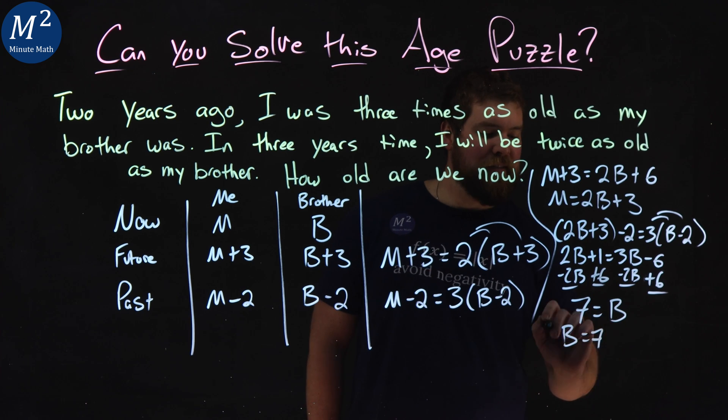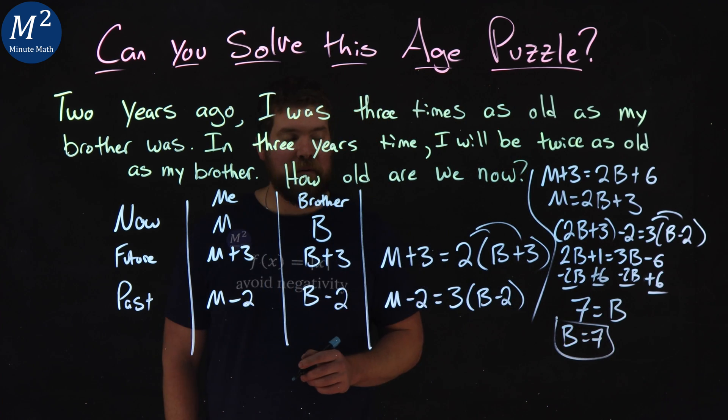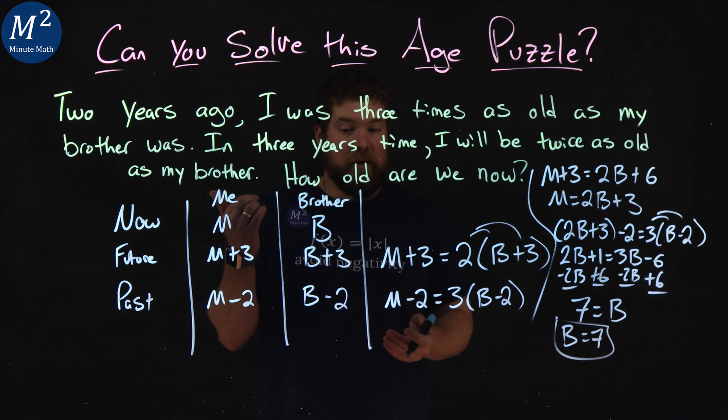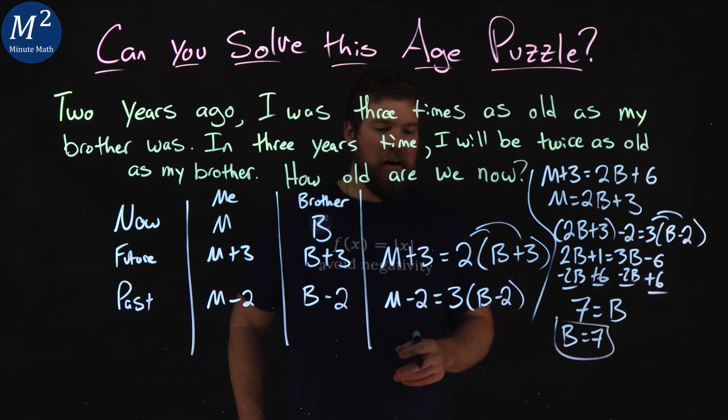So my brother's age is seven years old. Now I can use this to find my age.